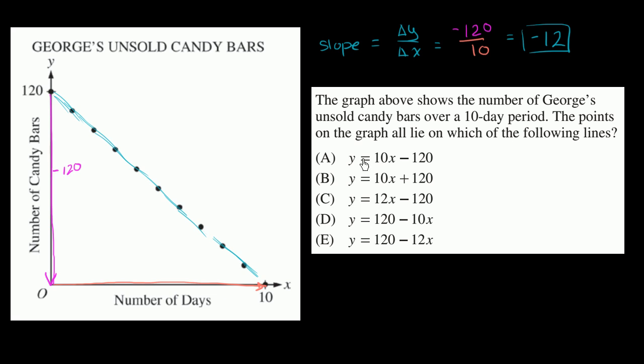So we want a line with a slope of negative 12. And immediately when you look over here, we could already start to think about the y-intercept, but immediately when you look over here, the slope is going to be the coefficient on the x. So here, this is a slope of positive 10. That's not right. Slope of positive 10. That's not right. Slope of positive 12. Not negative 12. That's not right.